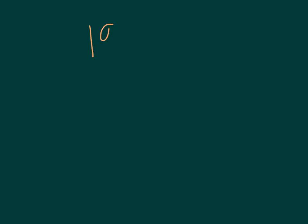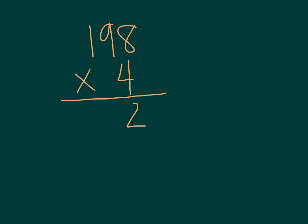We have 198 square-foot tiles times 4, because there are four 6-inch tiles in every square-foot tile. 8 times 4 is 32; 4 times 9 is 36, plus 3 is 39; 4 times 1 is 4, plus 3 is 7. That gives us 792 six-inch tiles.